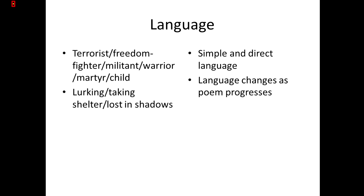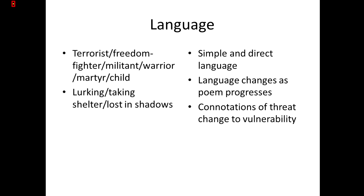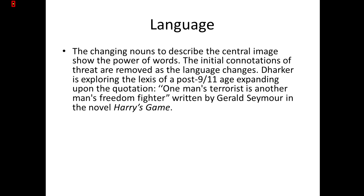As the poem progresses, the language changes and the connotations of that language change from threat to vulnerability. The nouns used — terrorist, freedom fighter, hostile militant — to describe the central image really show the power of words and how they can affect our attitudes and perceptions. There are initially connotations of threat, but as the language changes, the threat is removed. The poet Dharker is exploring the lexis — the language of the age that we live in.